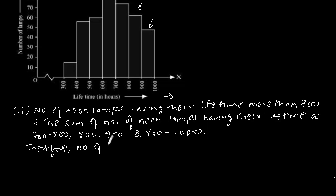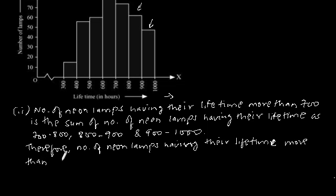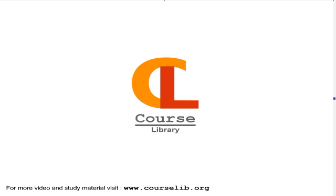Therefore, number of neon lamps having their lifetime more than 700 hours is equal to 74 plus 62 plus 48 which is equal to 184, which is our answer. Thank you.